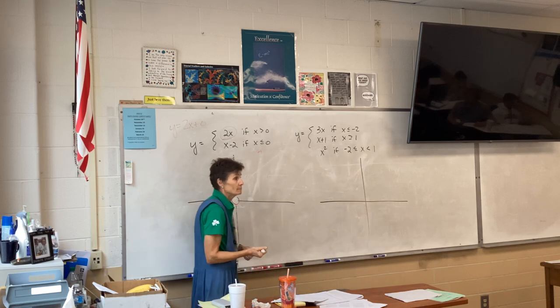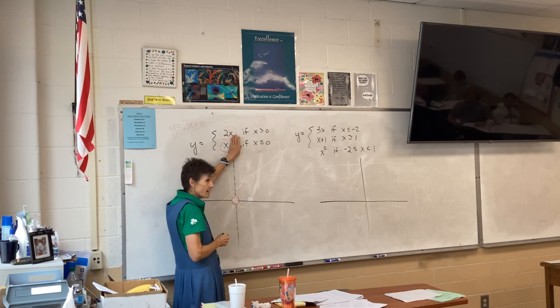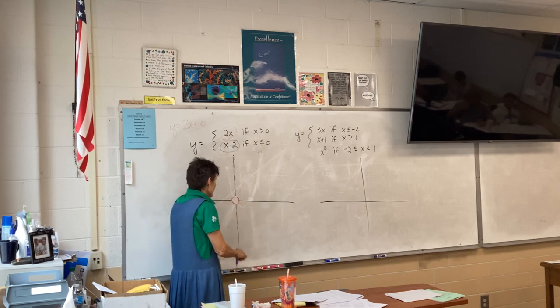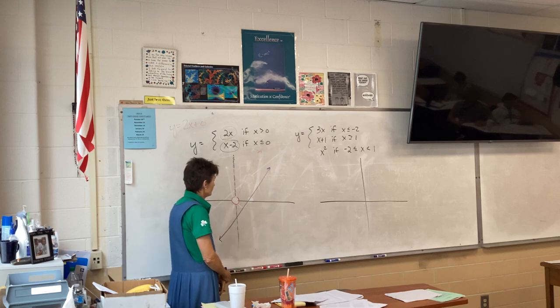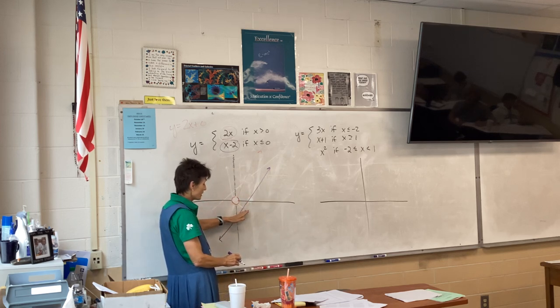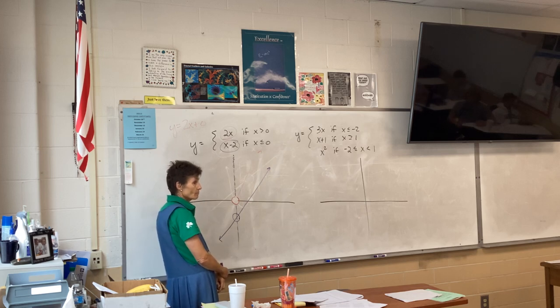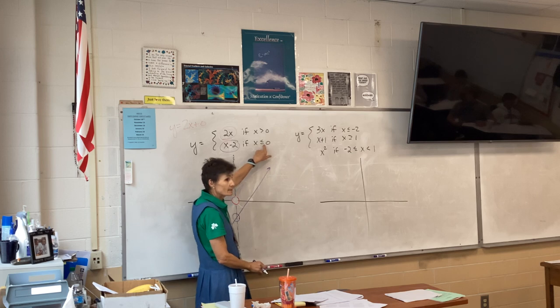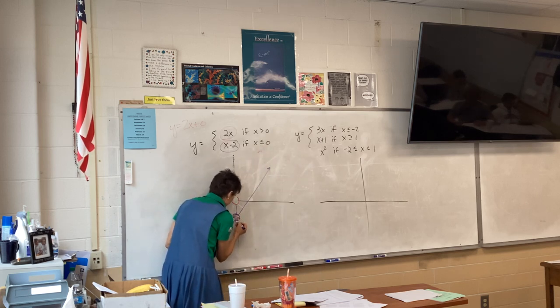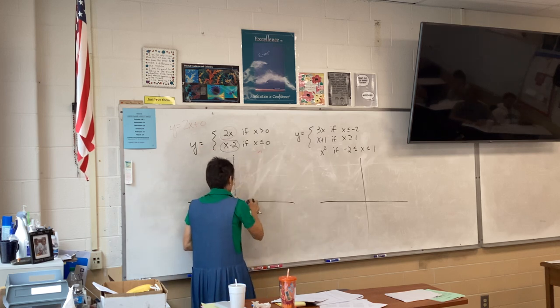Wherever it crosses, you're going to put a big dot. Then you pay attention. Do I color in that dot or do I leave it open? A nice big open dot right there. And then I'm going to erase everything. This tells me what to keep. So I'm going to keep that side and I'm going to erase this side of my line.